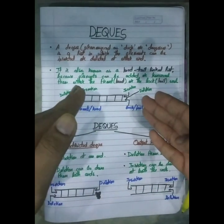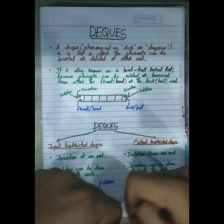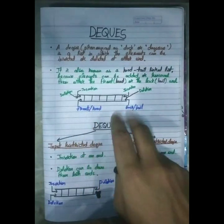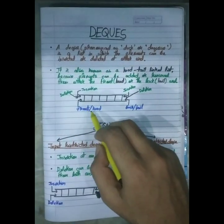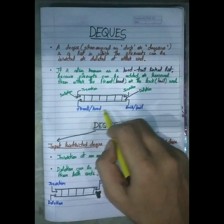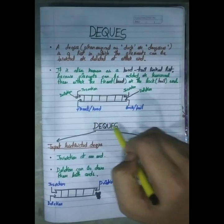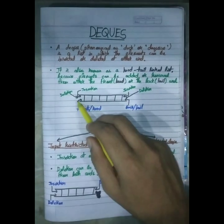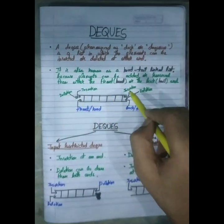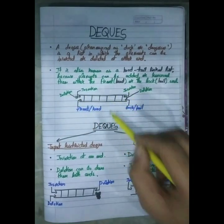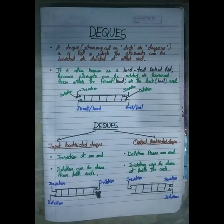Simply, consider one linked list. This is the front end — this is the head. This is the back end — this is the tail. We have insertion and deletion at both ends, which means both ends support insertion and both ends support deletion of elements.